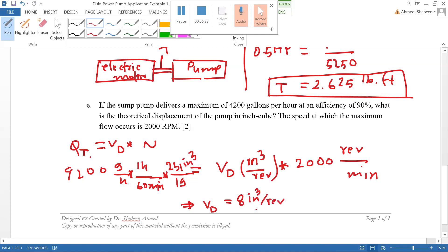VD, volumetric displacement, is approximately 8 inch cube per rev. However, typically the rev is kind of silent, so you just simply write 8 inch cube. That's the volumetric displacement of the pump.